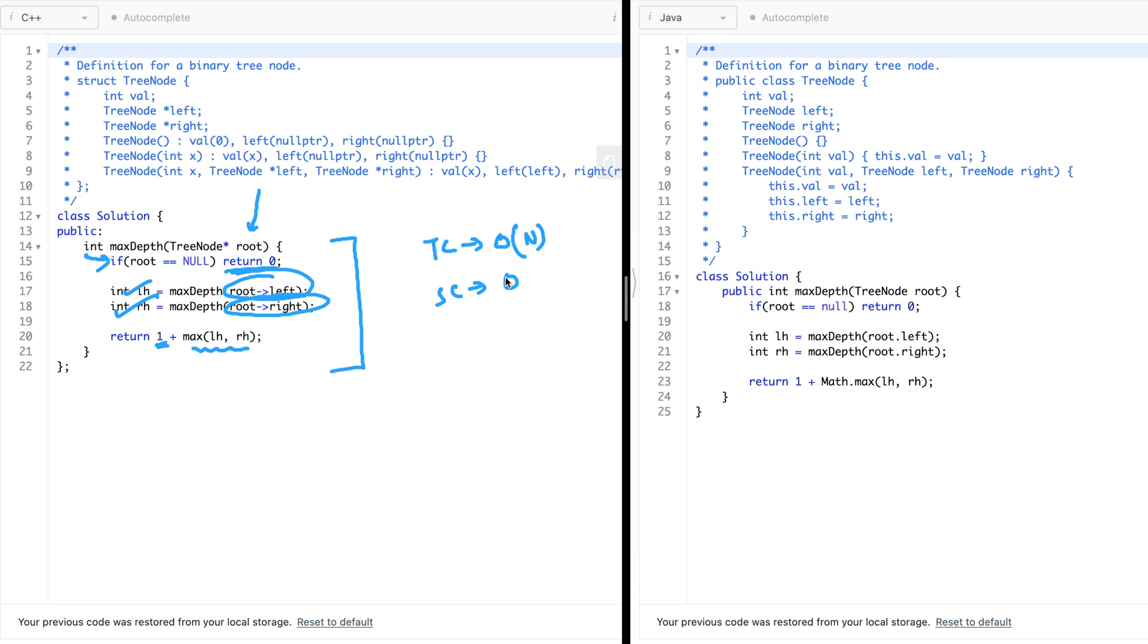And the space complexity, at the worst case, if it's a skew tree, it'll go on to O(N) for this kind of traversals. And you cannot do better than this. So that's what the time complexity and space complexity will be for this solution.